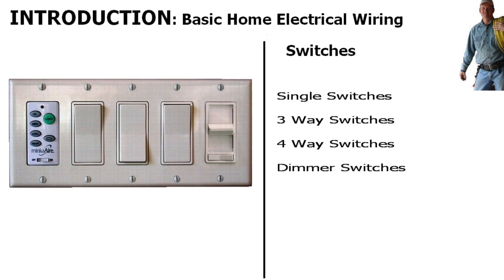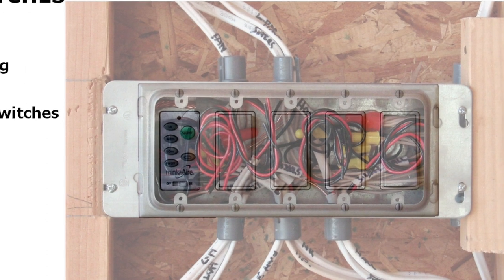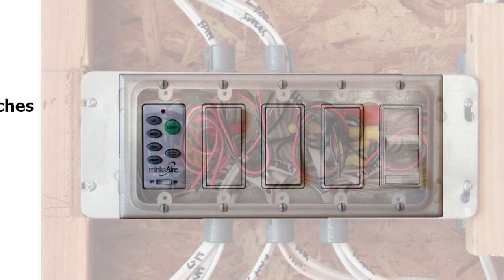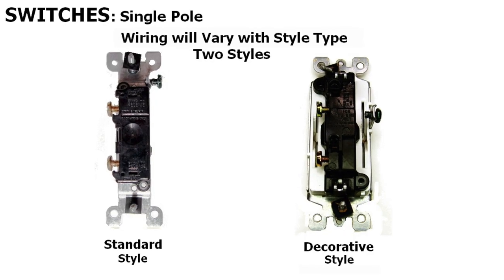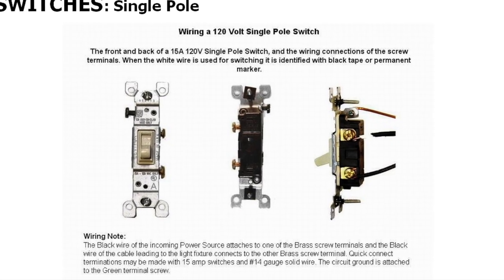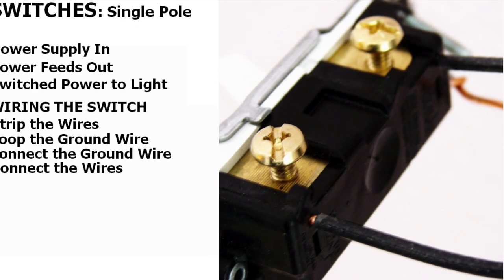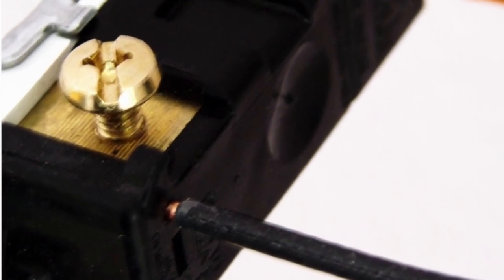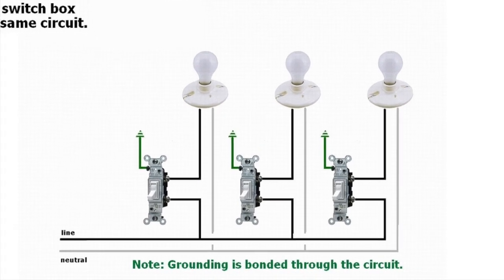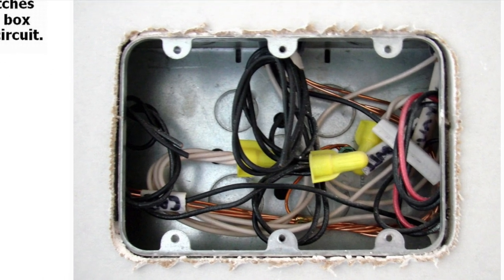Then we get into switches: single pole switches, three-way switches, four-way switches, and dimmer switches — what they're used for, how they're wired, and a practical demonstration of installing switches. We show the typical wiring scenarios found in homes with wiring diagrams representing the whole installation, including more than just one switch in a switch box and how those are wired.